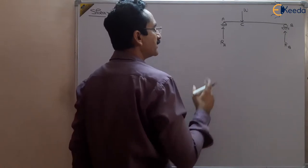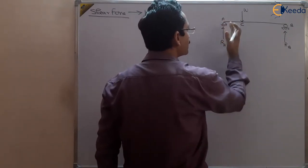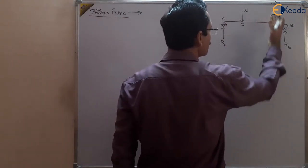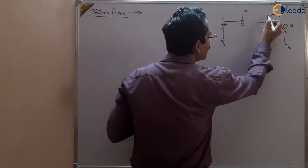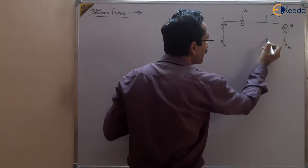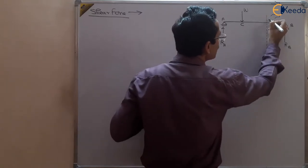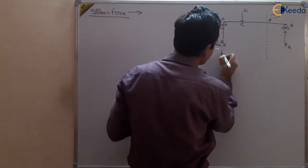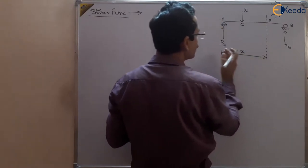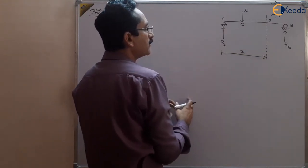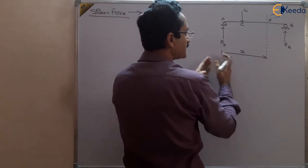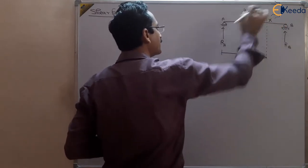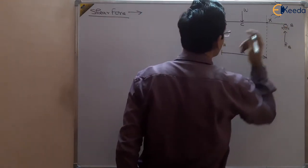And we want to find out the shear force. There will be shear force developed because this is a vertical force. Shear force will be developed at each cross section of the beam. We want to find out the shear force at a certain cross section X of the beam — suppose this is our cross section X, at a distance small x from point A.